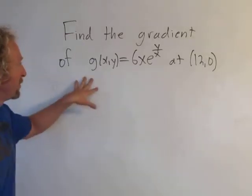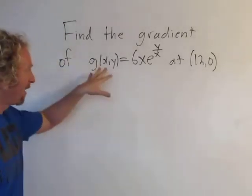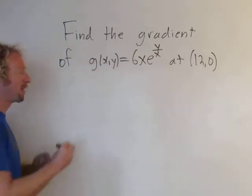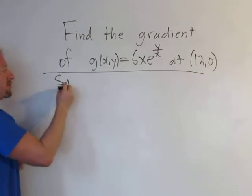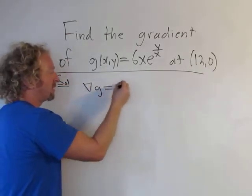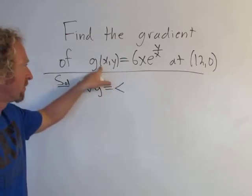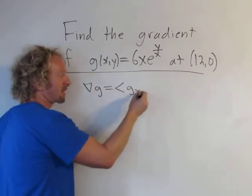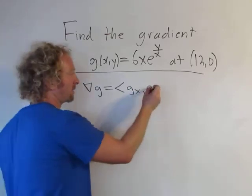In this video we're going to find the gradient of little g at the point (12, 0). The gradient vector is a vector of partial derivatives — the first component is the partial with respect to x and the second component is the partial with respect to y.